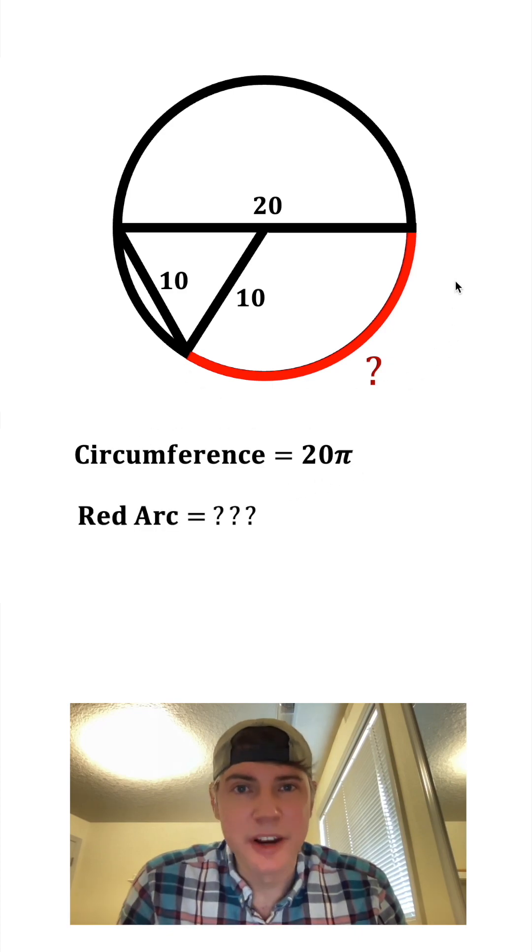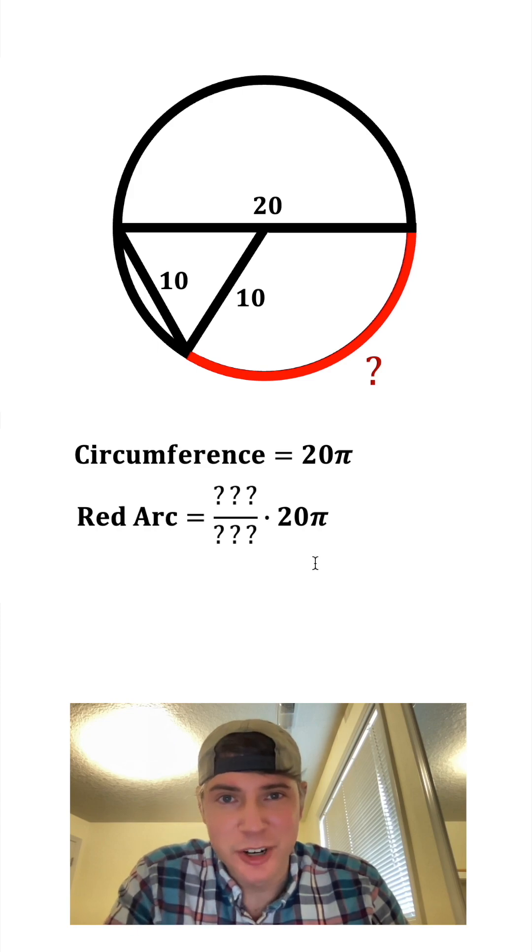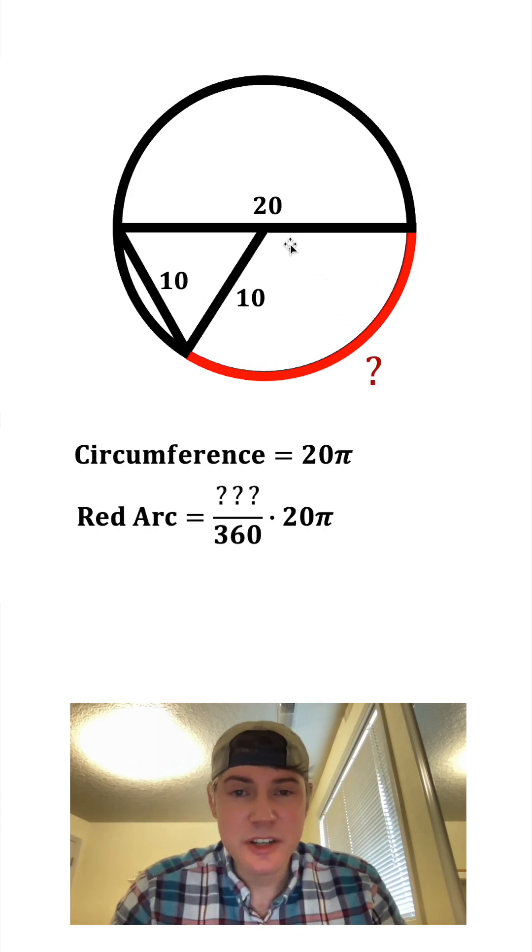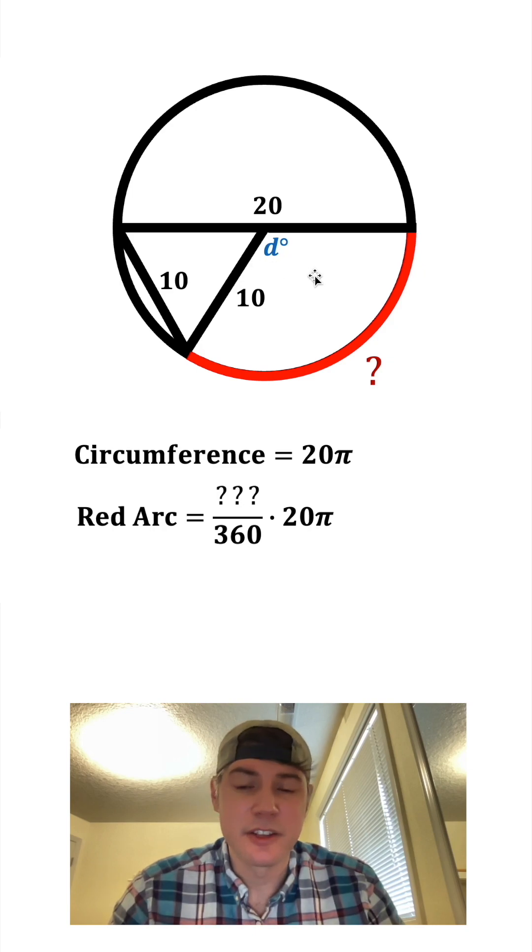So what is the length of this red arc? It's going to be a certain proportion of the entire circumference and a circle has 360 degrees, so we just need to figure out how many degrees are right here and it's going to be that degrees over 360 times 20π.